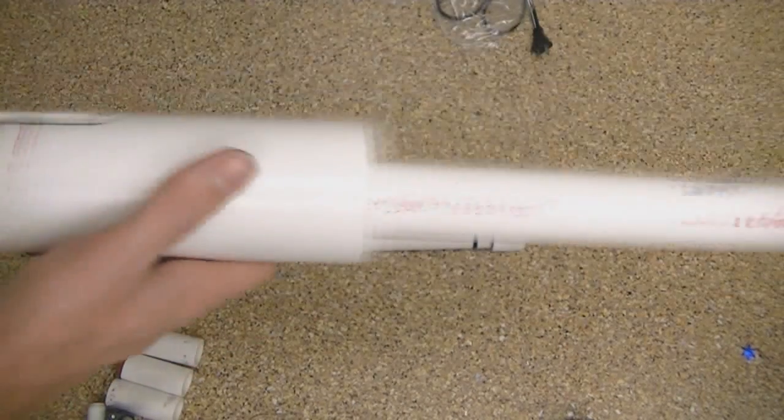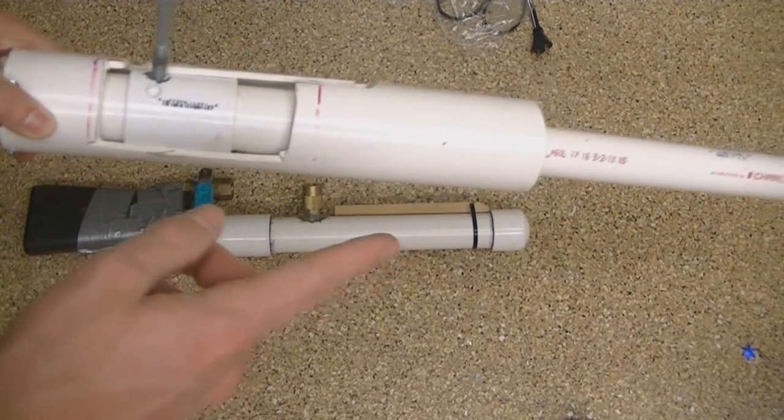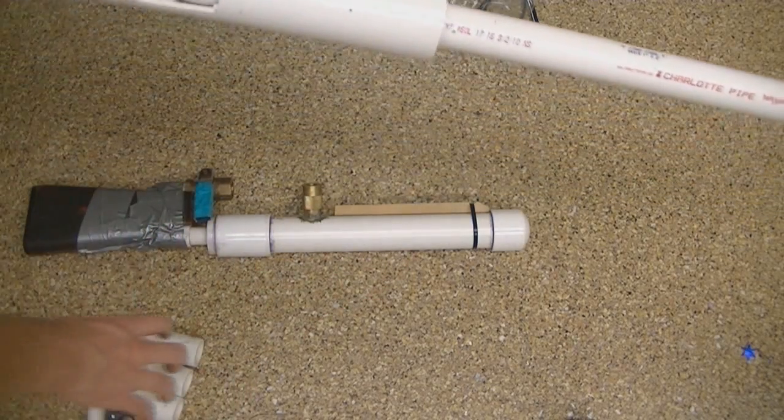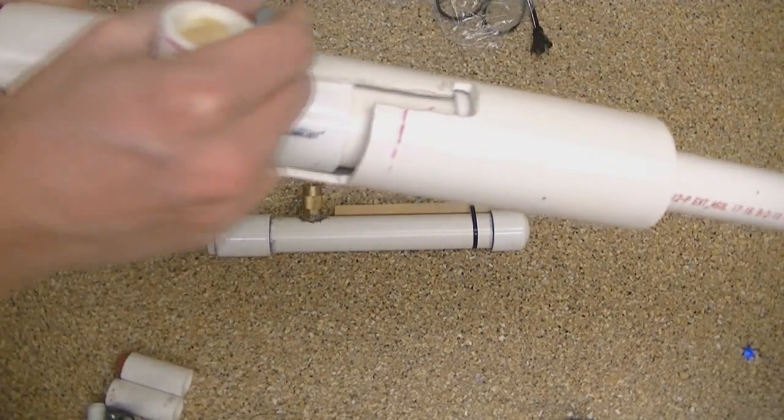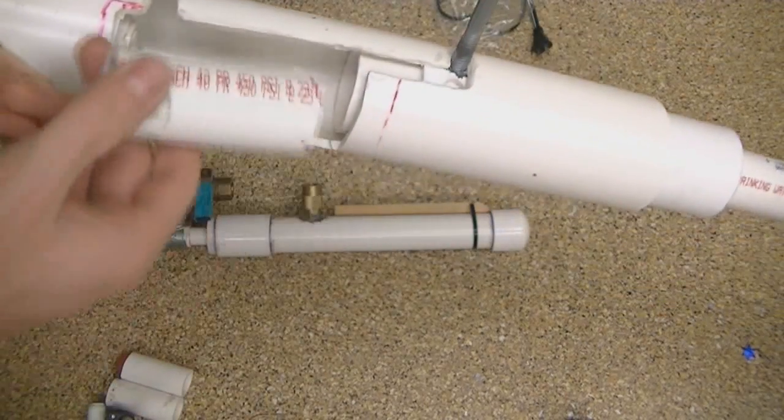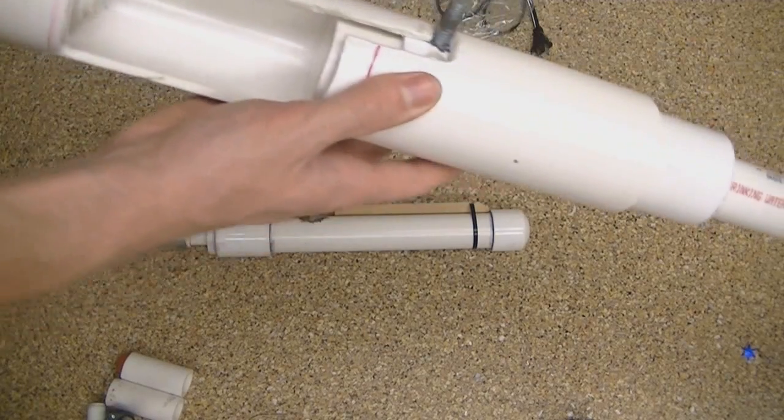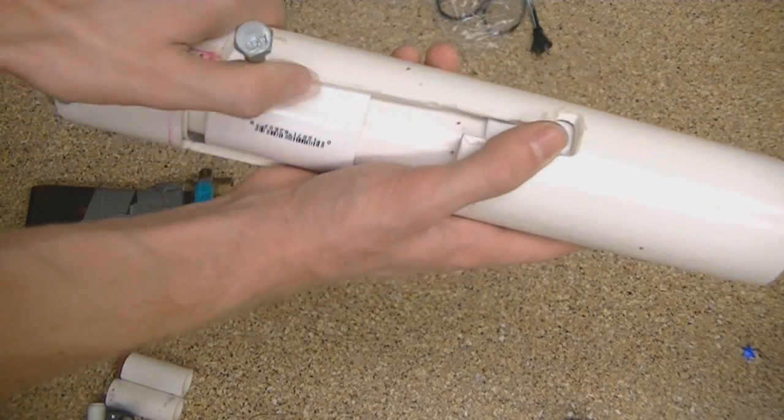So basically, it has a one-inch barrel and then it takes one-inch preloaded shells. You open it up, take a shell, put it in, and then bring it back and lock it in place.